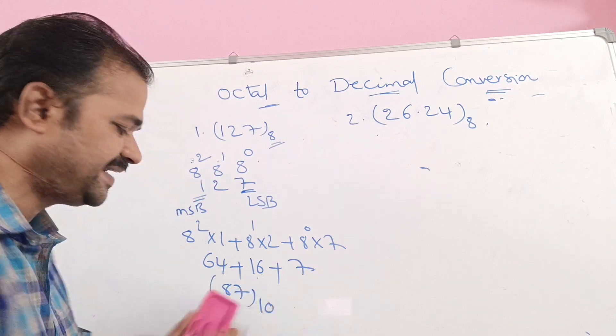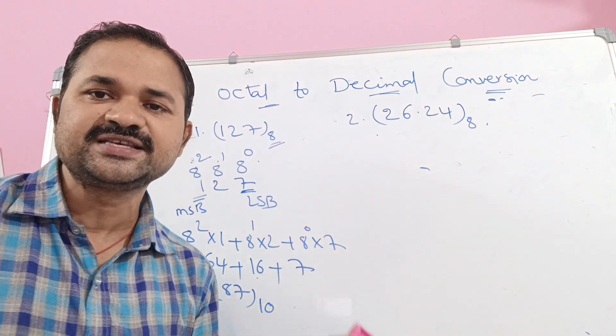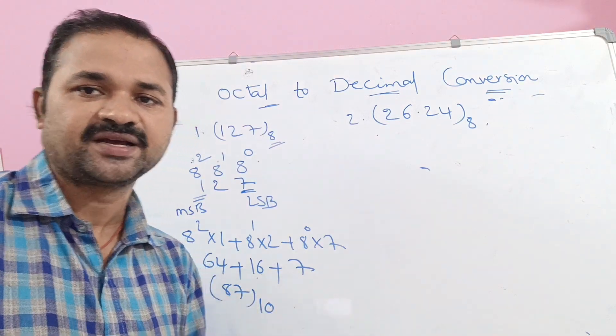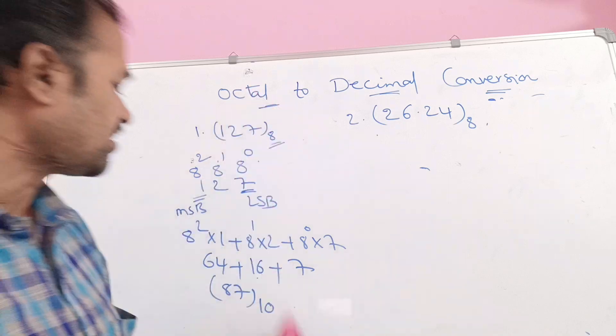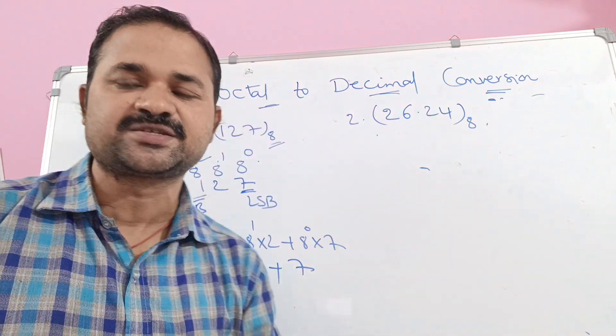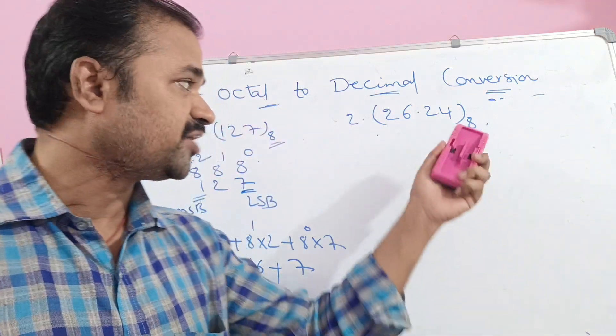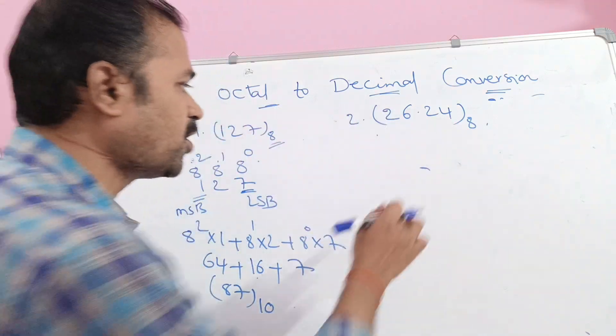What is the base here? 10. Why? Because this is a decimal number. So in this way we can convert an octal number into a decimal number. Now let us see the second problem, which has an integer part as well as a fractional part.